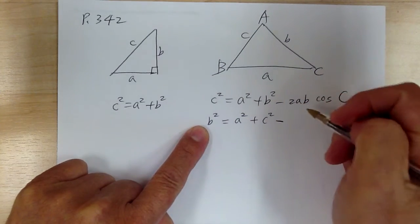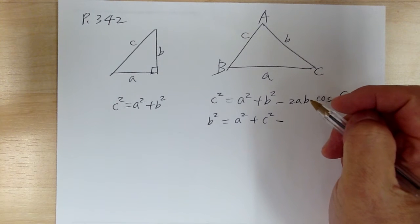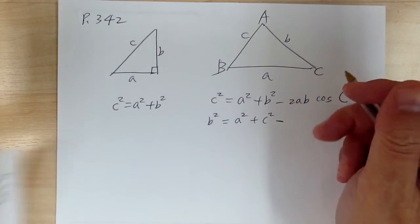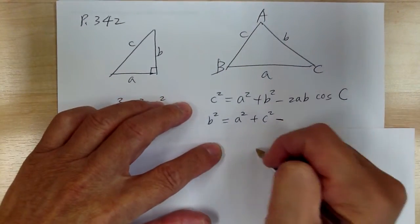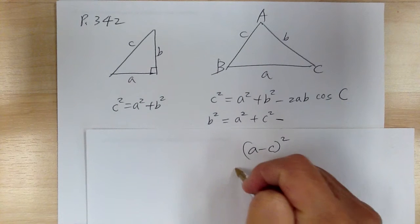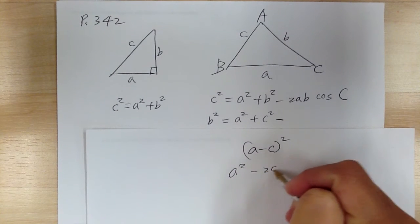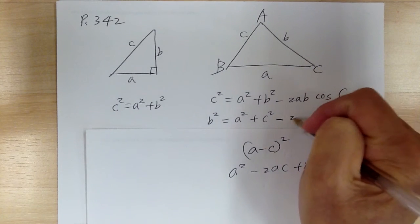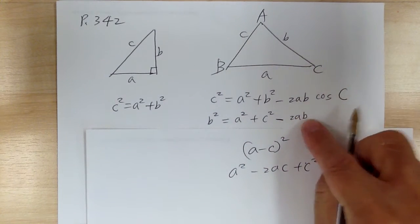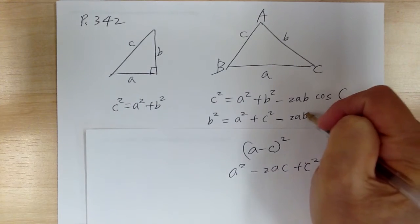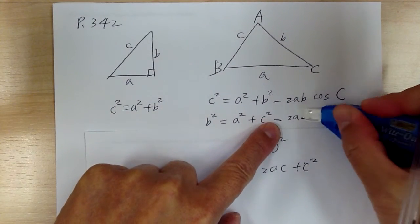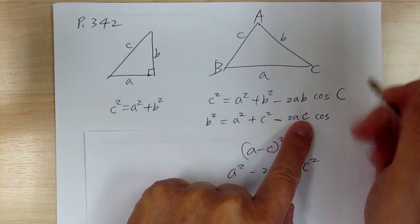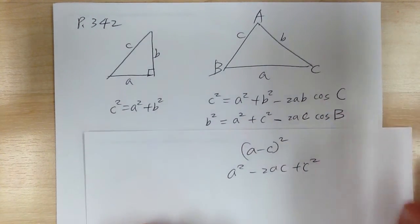Then over here you minus — think about when you square something, you're going to have a middle term, like a perfect square. For example, if you have A minus C, all squared, you're going to get A squared minus 2AC plus C squared. See that? So that's where the middle term is. So you got A and C, so you need to use A and C, and then you're going to get cosine of — now you have A and C, so you need to get B.